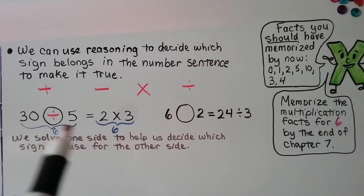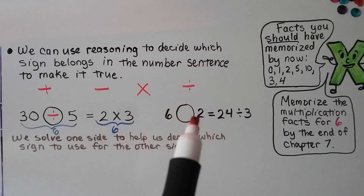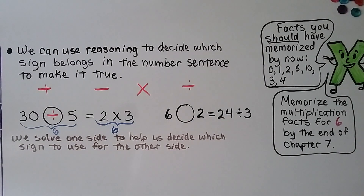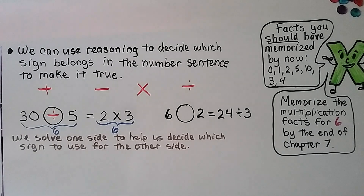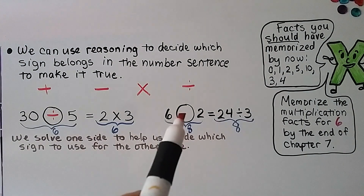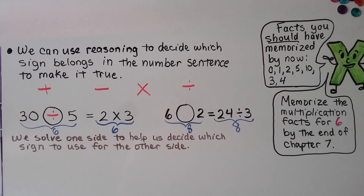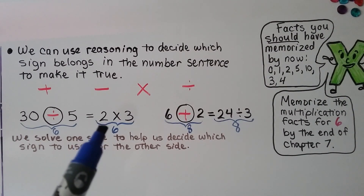We want both sides to be equal to each other because there's an equal sign there. We've got 6, and we don't know what the operation is, but we have a 2, and it's equal to 24 divided by 3. 24 divided by 3 is 8. That means this side of the equal sign must equal 8. If you said the plus sign, you're right, because 6 plus 2 is equal to 8. We solve one side of the equal sign to help us decide what sign to use for the other side.